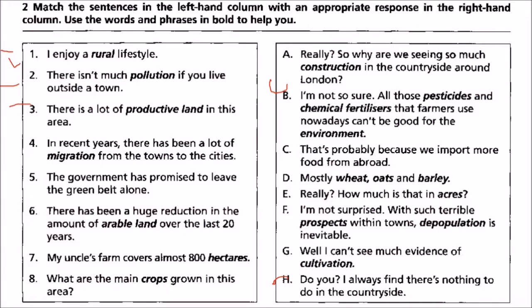Three: there is a lot of productive land in this area. We match it with G — I can't see much evidence of cultivation. Productive land.